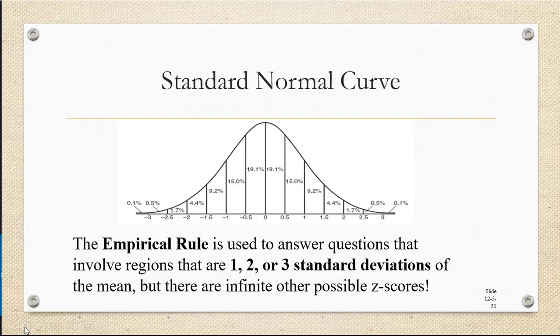In the previous video, we saw that if we have a normal distribution, we can use the empirical rule to answer questions that involve regions that are 1, 2, or 3 standard deviations away from the mean. But there are an infinite number of other possible z-scores that could occur besides a z-score of 1, 2, 3, or negative 1, 2, or 3.